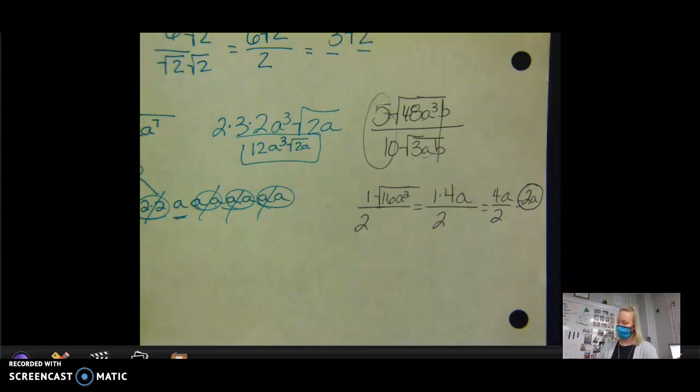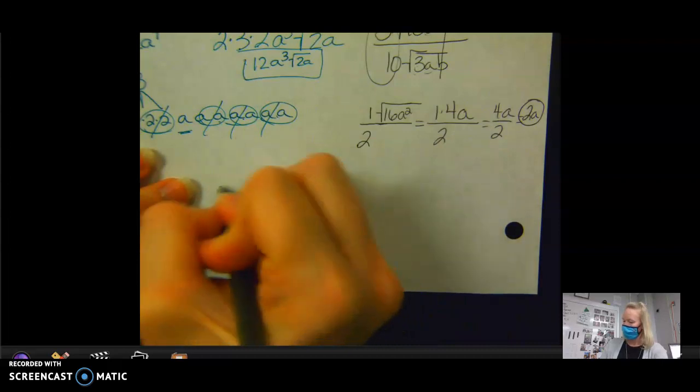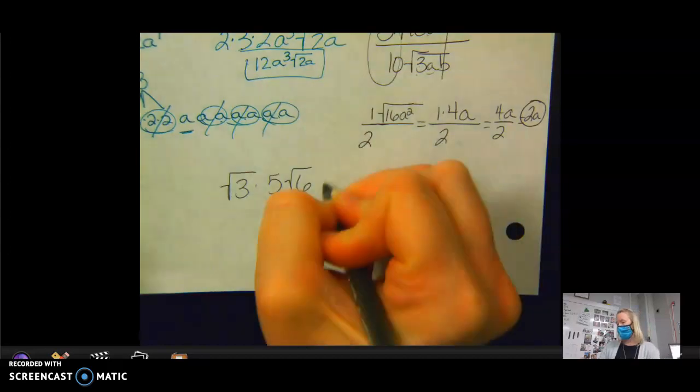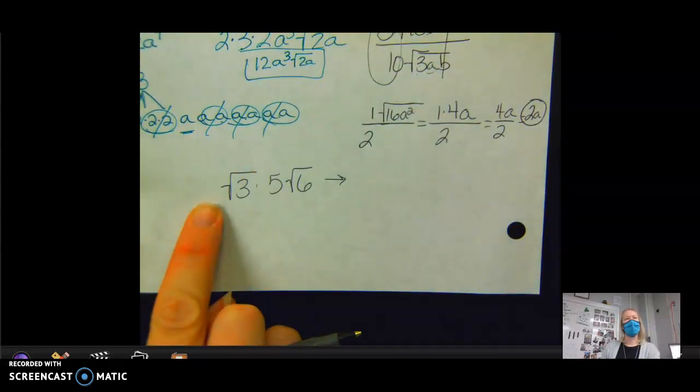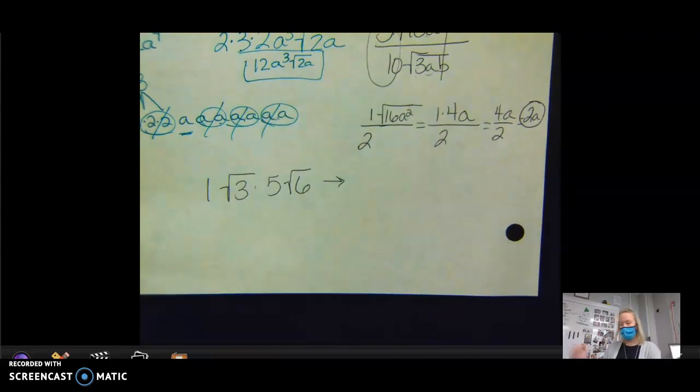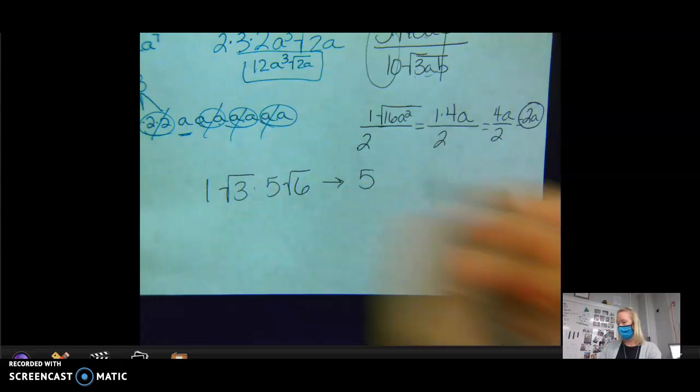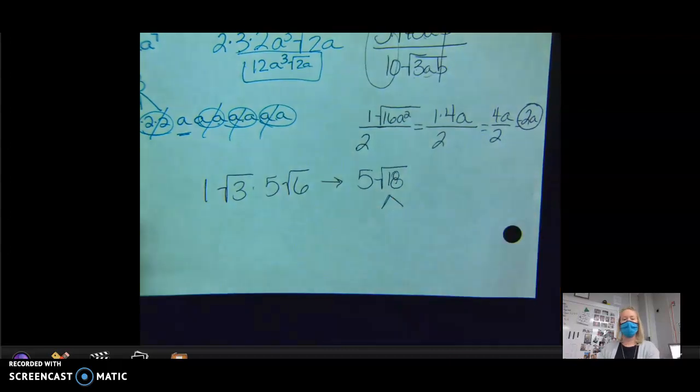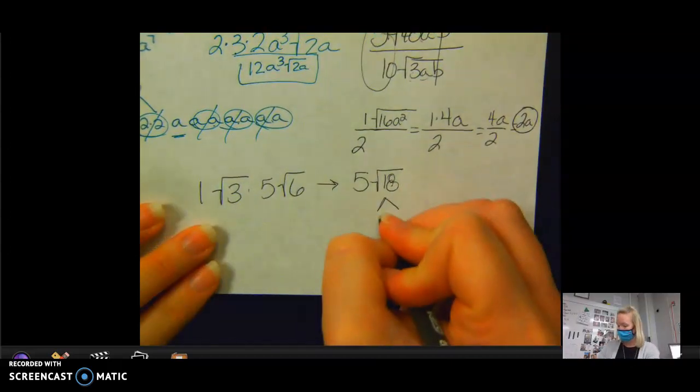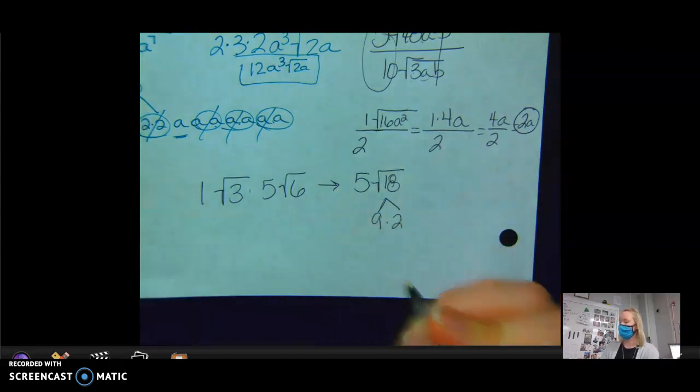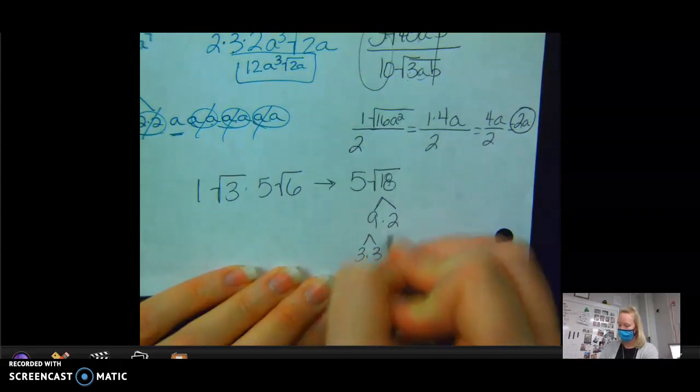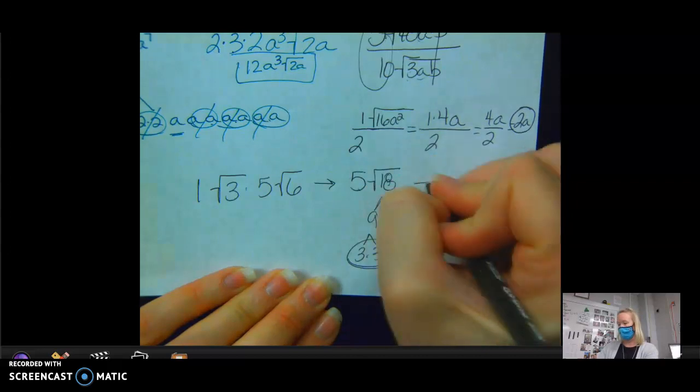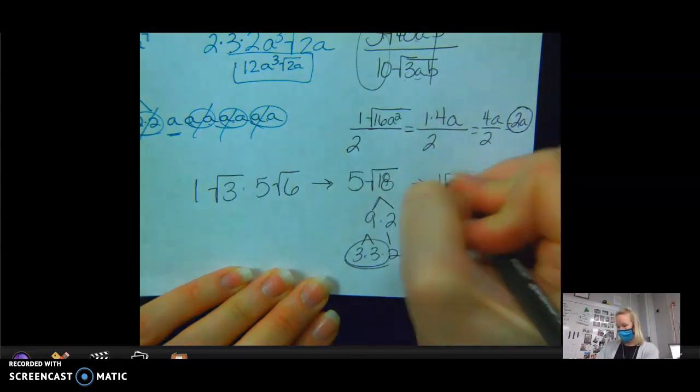Square root of 3 times 5 to the square root of 6. Like that? Okay. So outside times outside. What's my number outside this radical? 1. So what's 1 times 5? 5. What's 3 times 6? 18. At that point, start reducing it. Break this down. 18 breaks down into 9 and 2. I have a pair of 3s. So 3 comes out to multiply to that 5. What's 3 times 5? 15 square roots of 2.